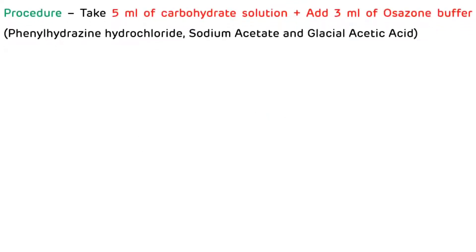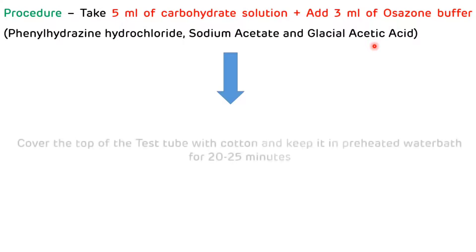Now we will see the procedure of the osazone test. First, take 5 ml of carbohydrate solution in a test tube, then add 3 ml of osazone buffer. The osazone buffer contains phenylhydrazine hydrochloride, sodium acetate, and glacial acetic acid.